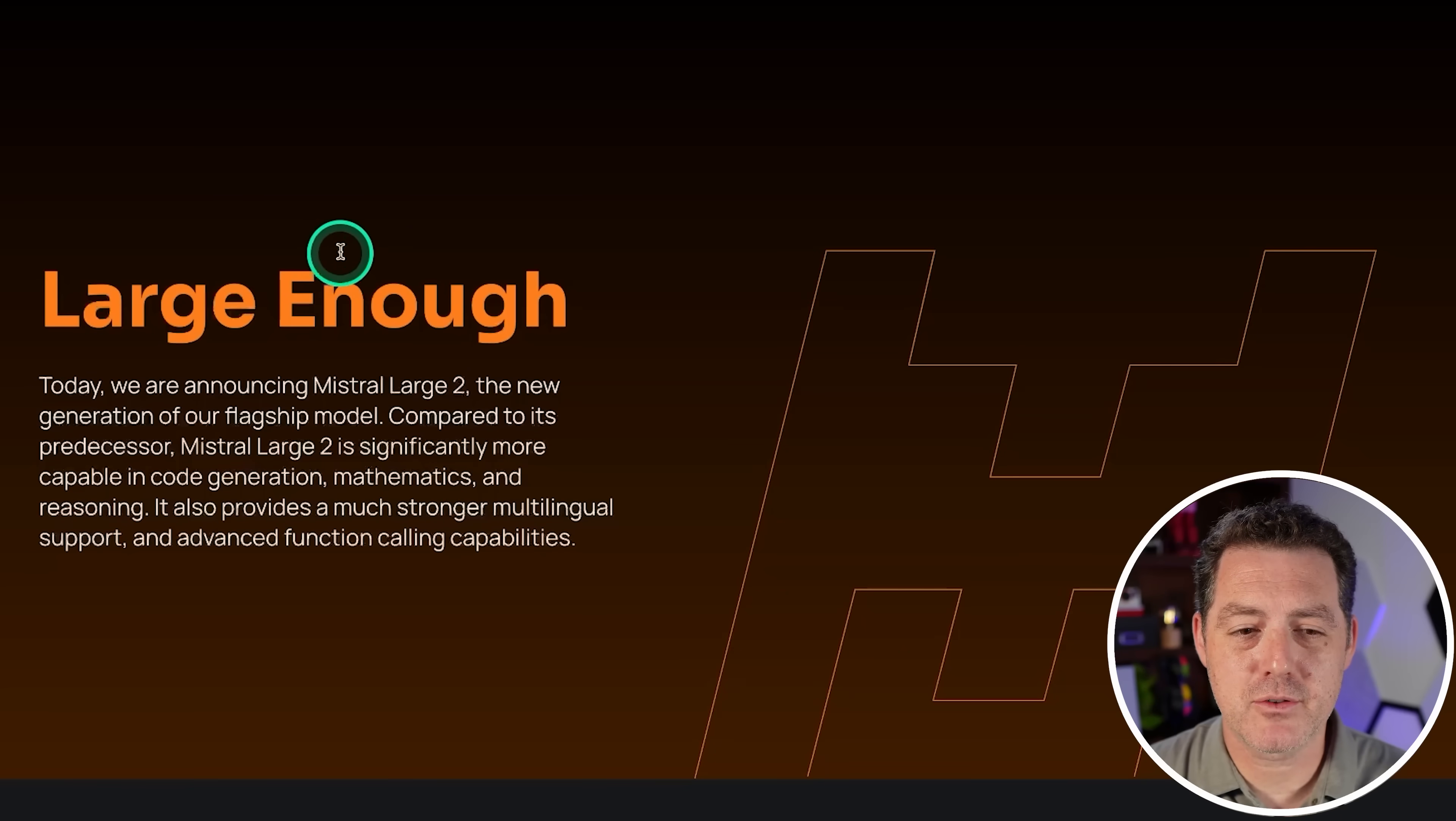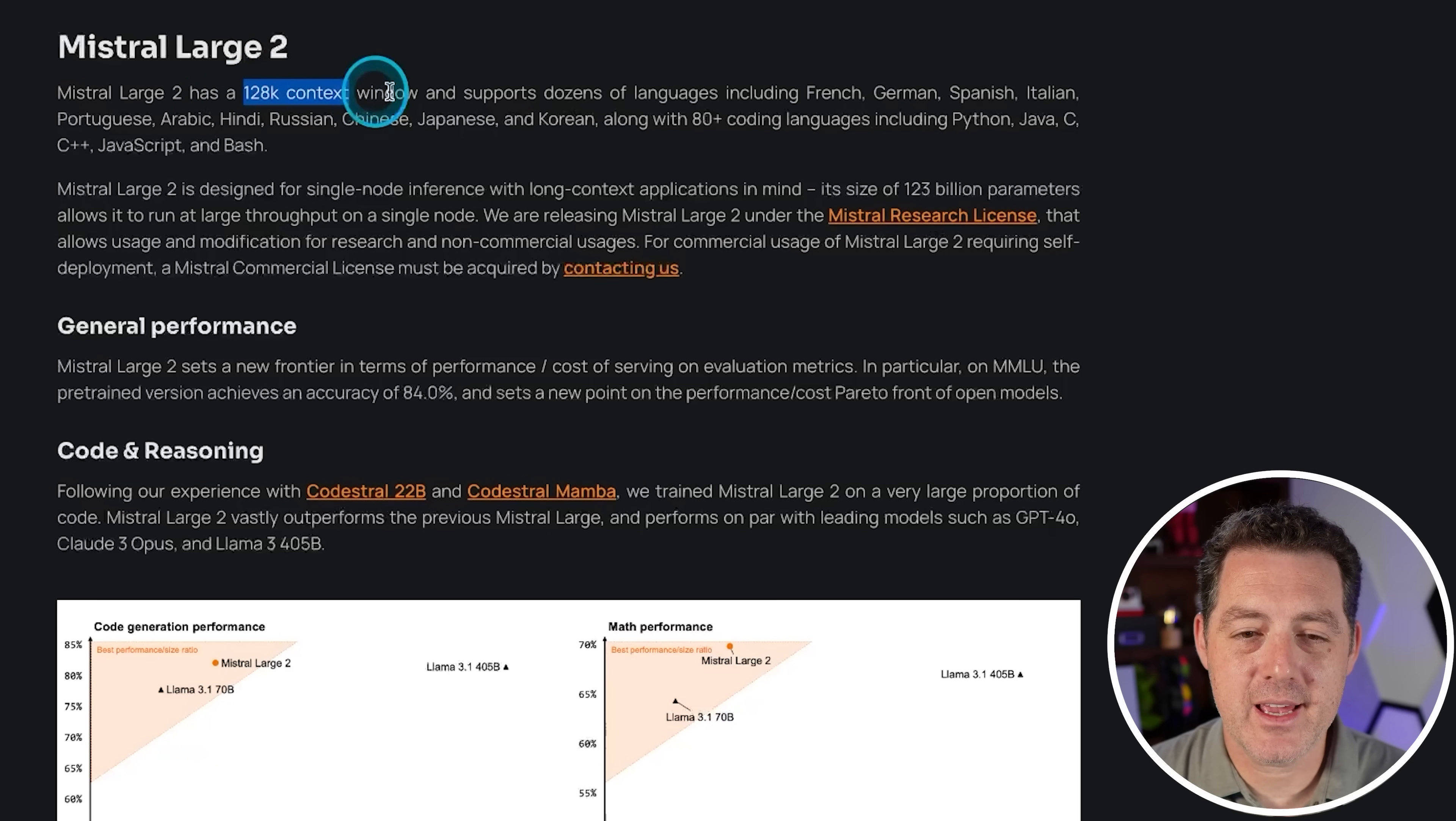So here's the blog post. I'll drop a link in the description below. Today, we are announcing Mistral Large 2, the new generation of our flagship model. Compared to its predecessor, it is significantly more capable in code generation, mathematics, and reasoning. It also provides much stronger multilingual support and advanced function calling capabilities. It has a 128k context window, which seems to be the standard nowadays.